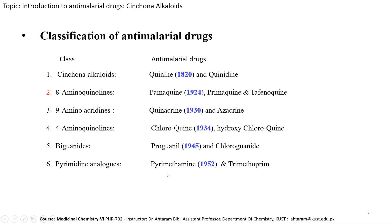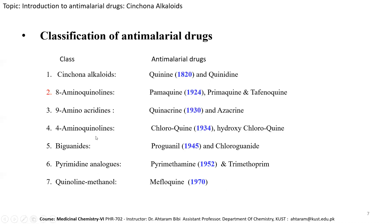The sixth class is pyrimidine analogues; examples include pyrimethamine, synthesized in 1952, and trimethoprim. The seventh and last class included in the syllabus is quinoline methanol; an example is mefloquine, synthesized in 1977. Today's lecture focuses on the cinchona alkaloids, which we will discuss in detail.